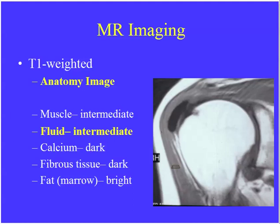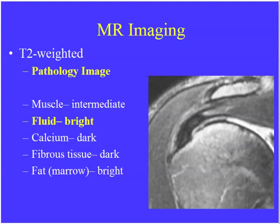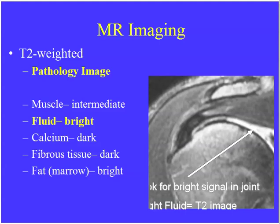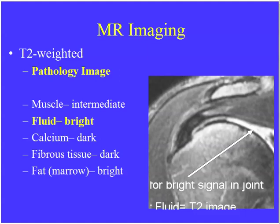When looking at an MR image to determine if it's T1 or T2, muscle will be intermediate. Fluid is also intermediate on T1, so if you see fluid within muscle you won't be able to distinguish the two. Calcium will be dark, as seen in calcific tendonitis. The cortex is dark. Fibrous tissue such as the labrum and rotator cuff is dark, and fat is bright — subcutaneous fat and marrow fat are both bright. On T2, the key difference is that fluid is bright rather than intermediate. Look where fluid might be; if you see something bright in the joint, you're dealing with a T2-weighted image.